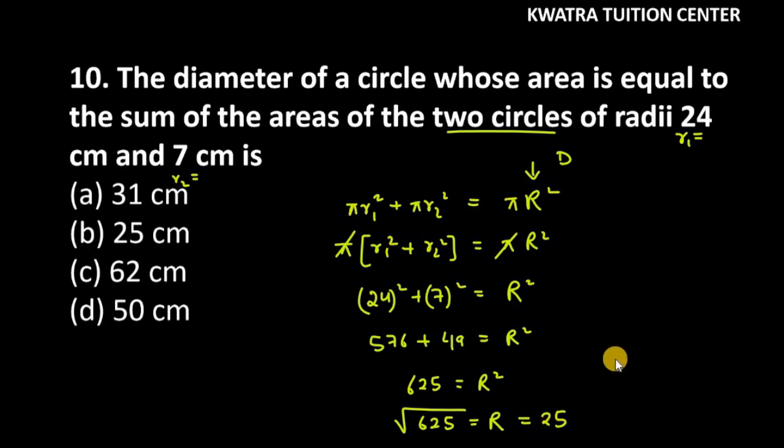So this will be √625, which equals 25. And one more thing, we have to find diameter. Diameter is twice of R, it is 2 × 25 = 50 centimeters. So option D is the right option for question number 10.